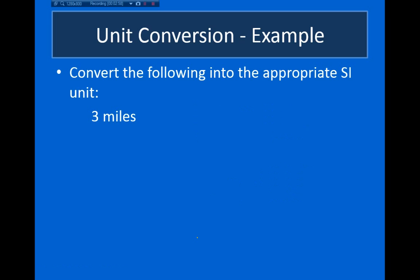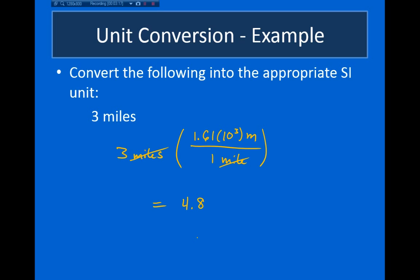So let's see how this works. I take 3 miles and multiply by 1.61 times 10 to the third meters divided by 1 mile. The units of miles cancel, and what I'm left with is 4.83 times 10 to the third meters.